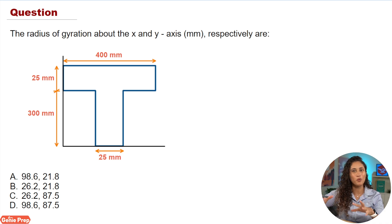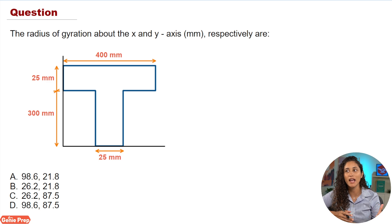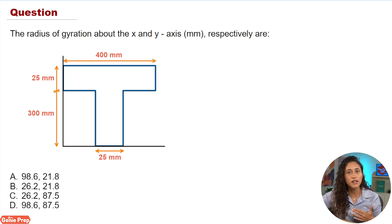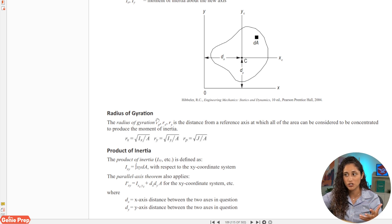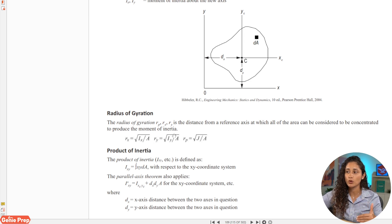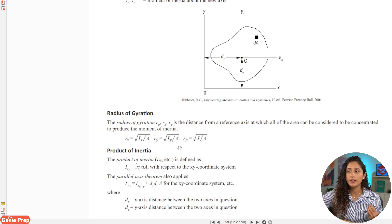In this problem we are given a shape and we need to find the radius of gyration about the x and y axes respectively. The first thing we need to do is go to the reference handbook and grab the equation. We're given that rx equals the square root of Ix over A, and ry equals the square root of Iy over A, where A is just the total area.